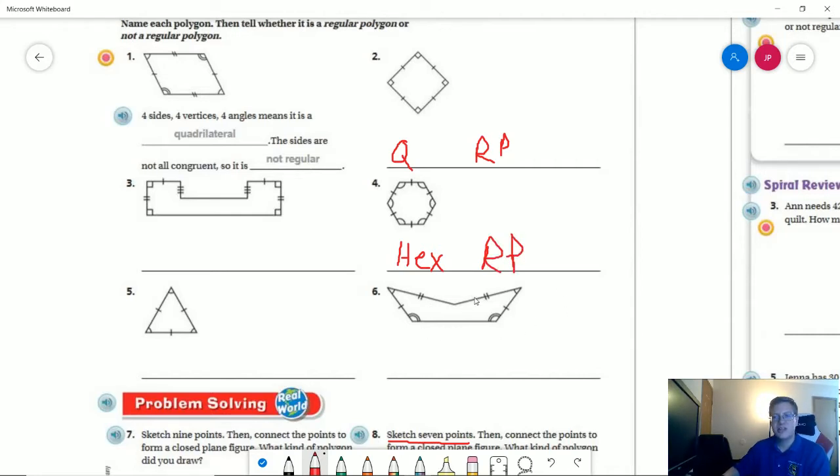For number six, I have one, two, three, four, five sides, so I have a pentagon, and I do not have a regular polygon, so not a regular polygon.